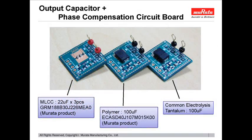This is the capacitor mounted on the subboard. From the left, this is a monolithic ceramic capacitor, a conductive polymer capacitor, and a common capacitor. Since three monolithic ceramic capacitors of 22 microfarads of the 1608 size are used, the total capacitance is 66 microfarads. The other two capacitors are 100 microfarads each.